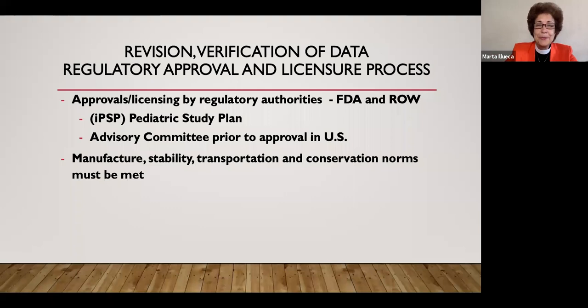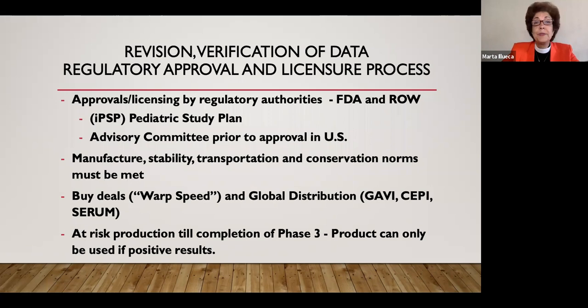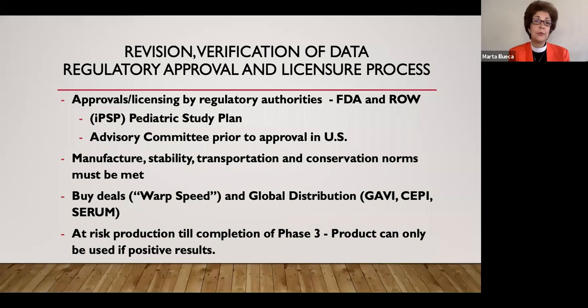The manufacturing norms I mentioned — stability, temperature — all have to be met, and that's also a step in the regulatory approval process. In the U.S., there are already some buy deals, and you all know about Operation Warp Speed. In terms of worldwide distribution, there are philanthropic organizations, one of the more important ones being GAVI, a vaccine alliance that works closely with the World Health Organization. The WHO also has a program called COVAX, C-O-V-A-X, that would allow third-world countries to have access to vaccines.